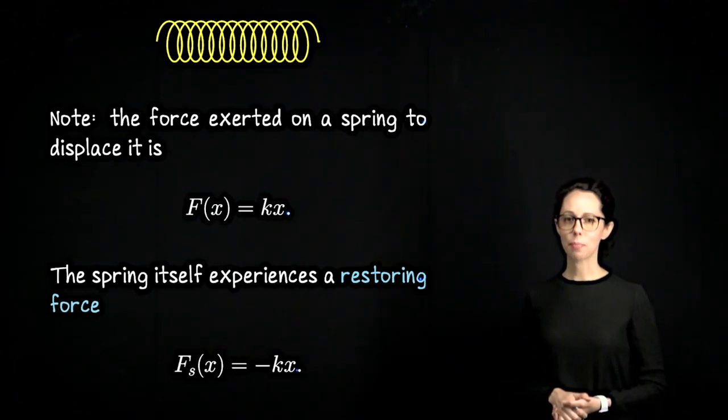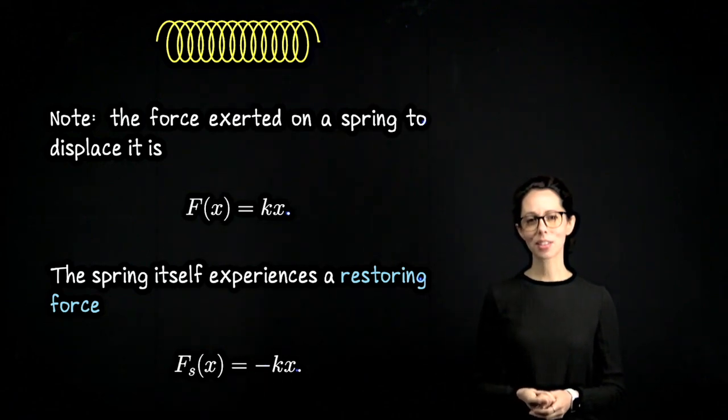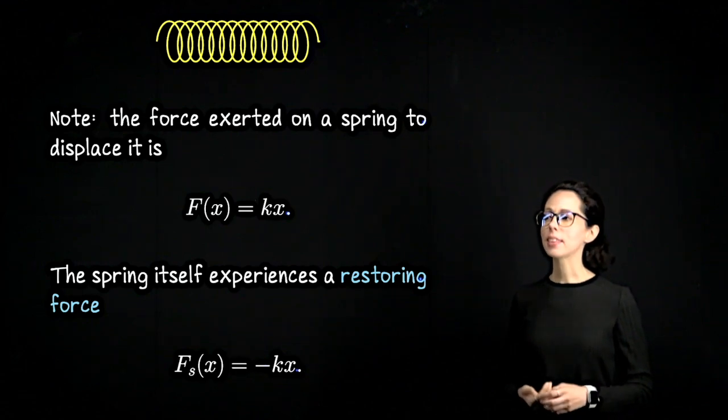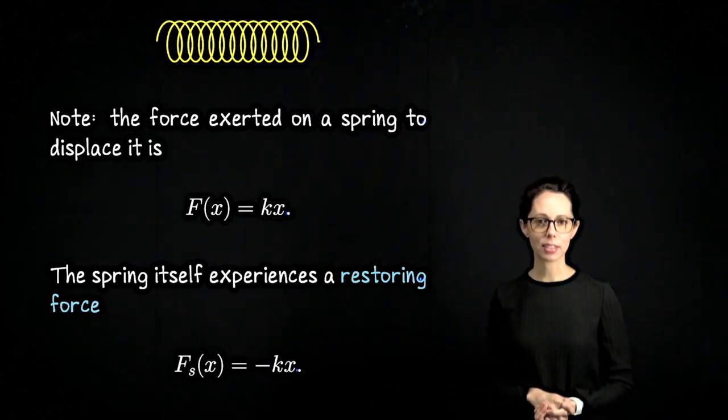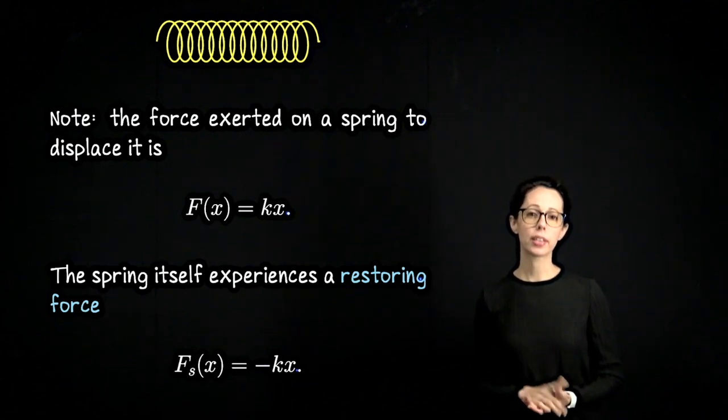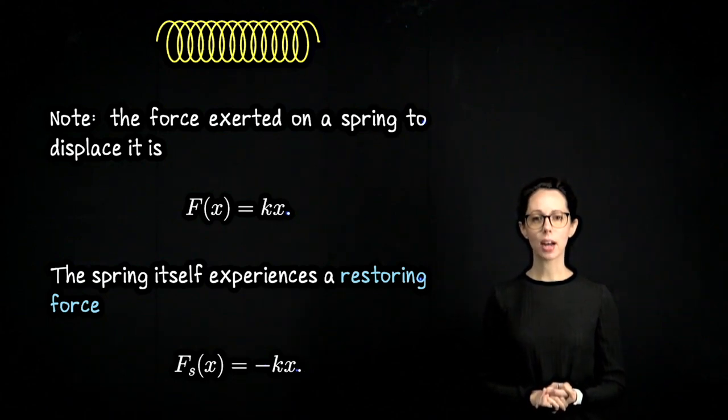I want to finish this lesson by talking about another version of Hooke's Law that you might run across. What we looked at in this lesson said that the force required to displace a spring by x units is proportional to that spring's amount of displacement. So F(x) equals kx where k is a positive spring constant.